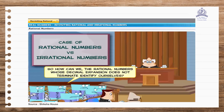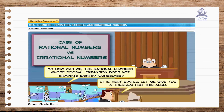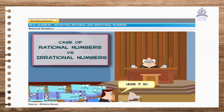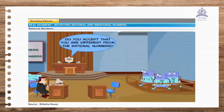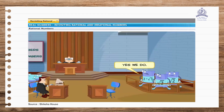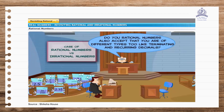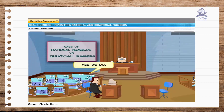How can you identify a rational number whose decimal expansion does not terminate or is recurring? Mr. Public Prosecutor has a theorem for this also: if P/Q is a rational number such that the prime factorization of Q is not of the form 2^a × 5^b, where a and b are non-negative integers, then the decimal expansion of P/Q does not terminate and is recurring.